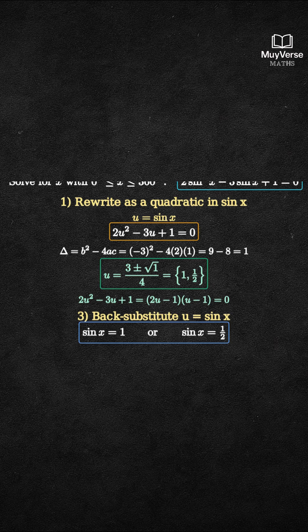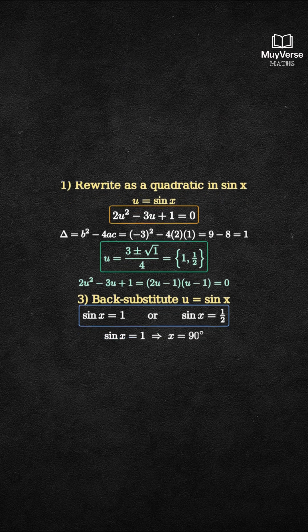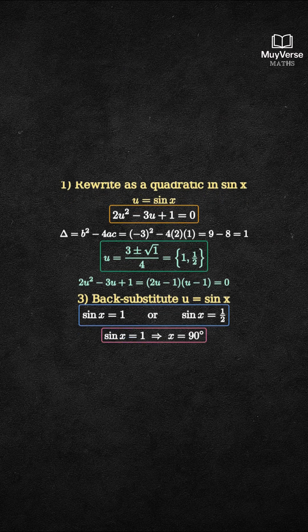Step 4. Solve each equation on the interval from 0 to 360 degrees. For sine x equals 1, the angle on the unit circle with a topmost y value is 90 degrees only.